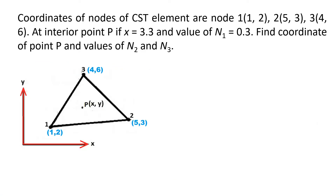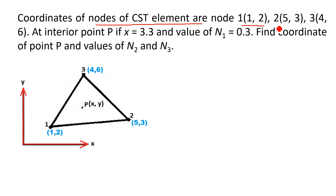The statement of the problem is: coordinates of nodes of a CST element are — node number 1, coordinates are (1, 2); node number 2, coordinates are (5, 3); and node number 3, coordinates are (4, 6), which are also shown in the figure.